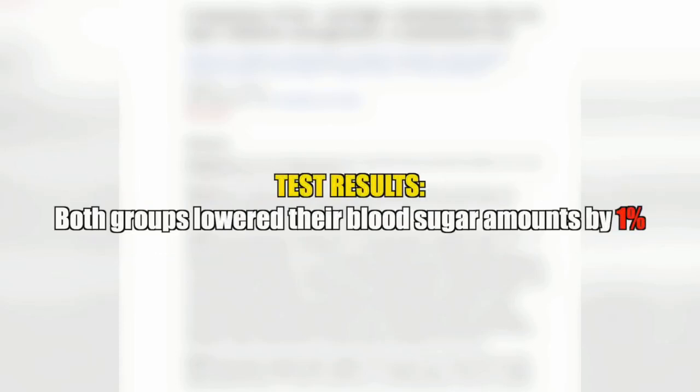At the end of the study, both groups lowered their blood sugar levels by the exact same amount, 1%. That's an A1c of 7.3% down to 6.3%. So no real advantage for carbohydrates in terms of blood sugar levels. There was an advantage for carbohydrates in the sense that less insulin was needed to get their blood sugar down. So it's a very minor effect.